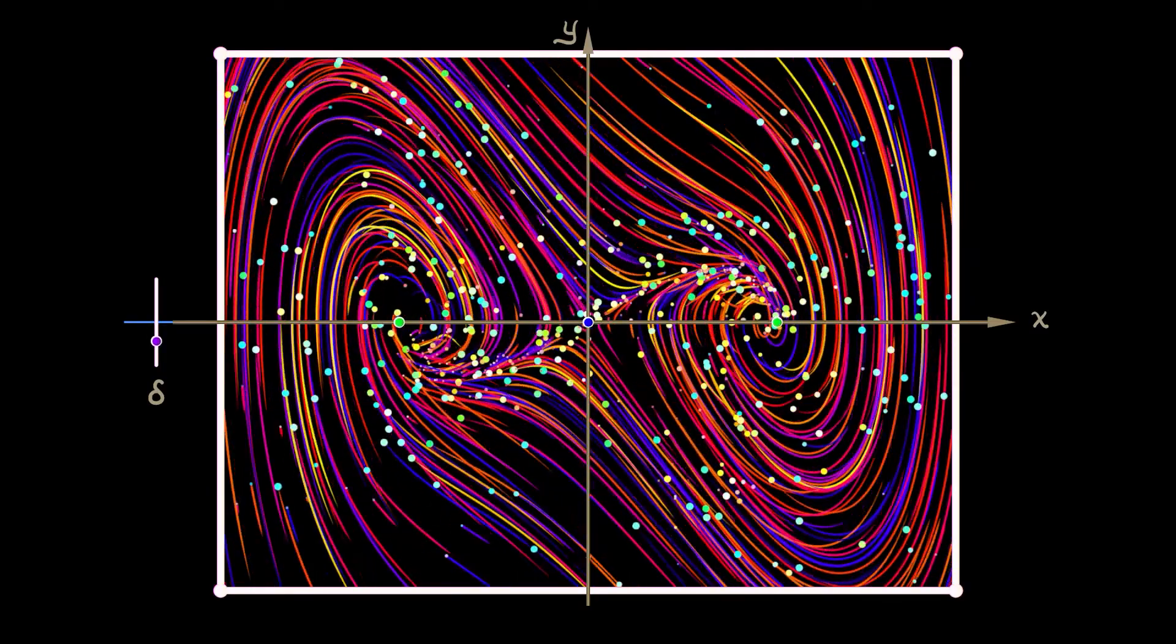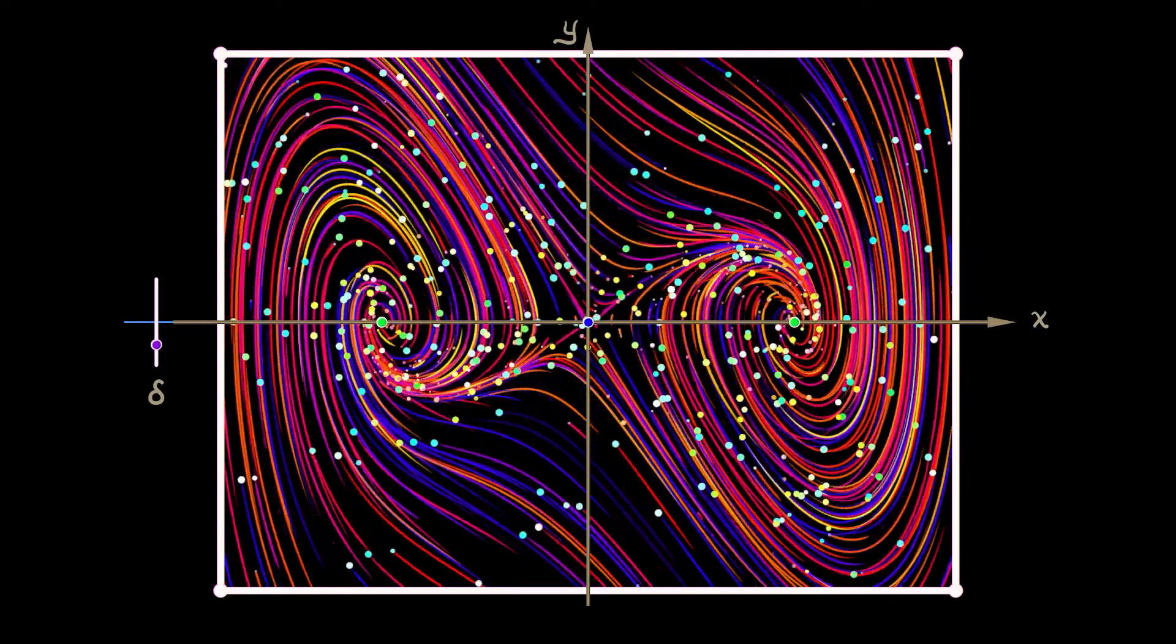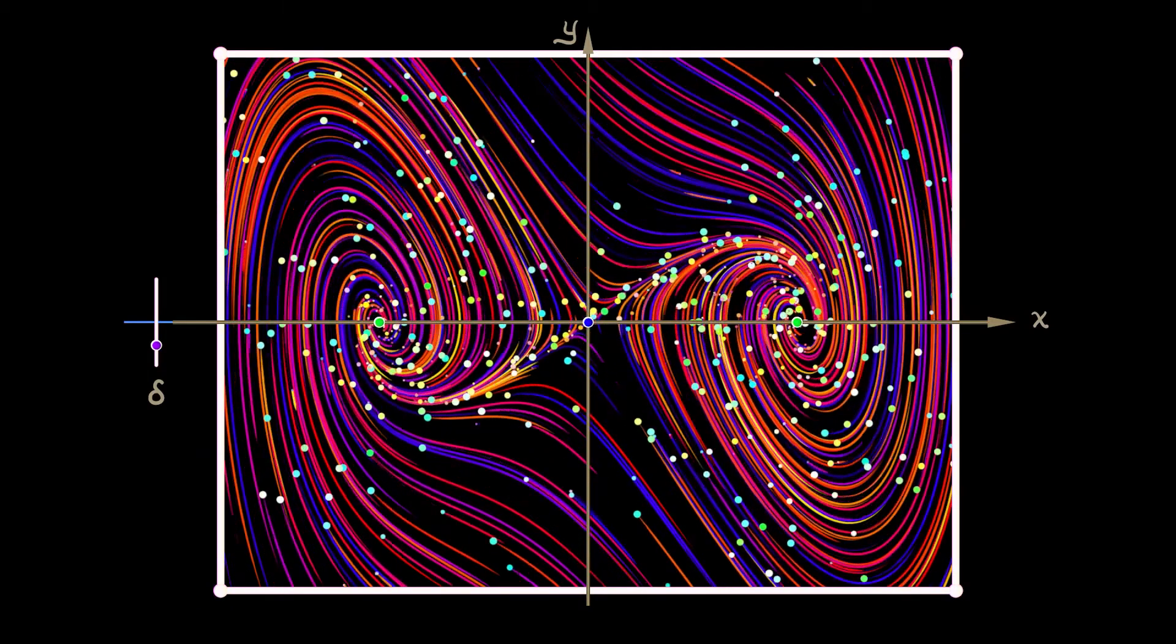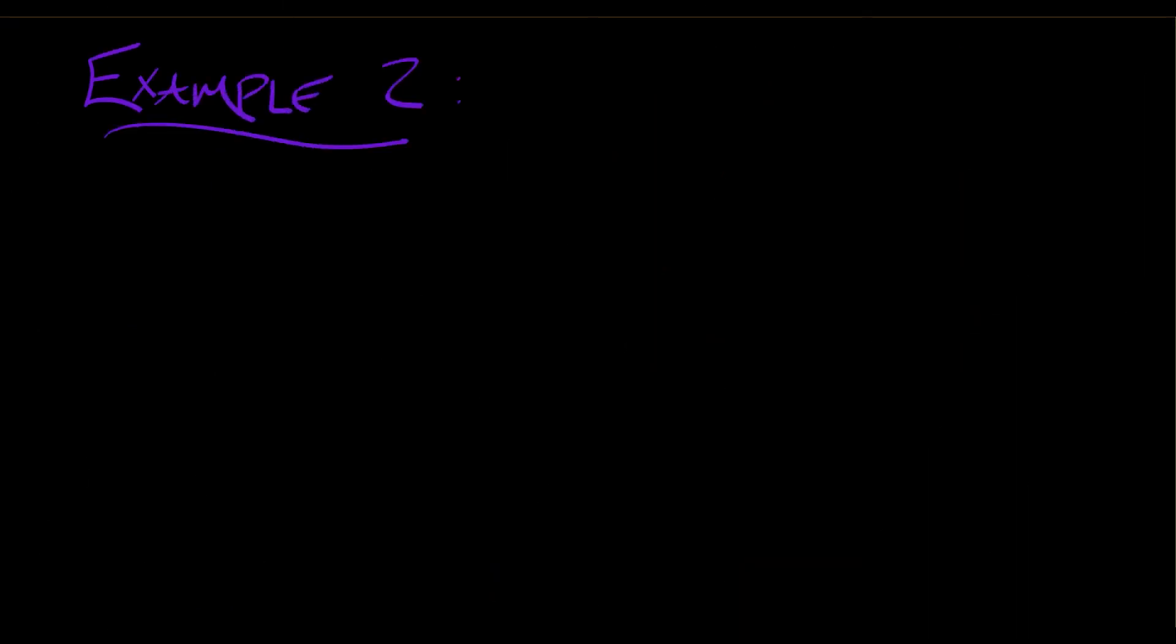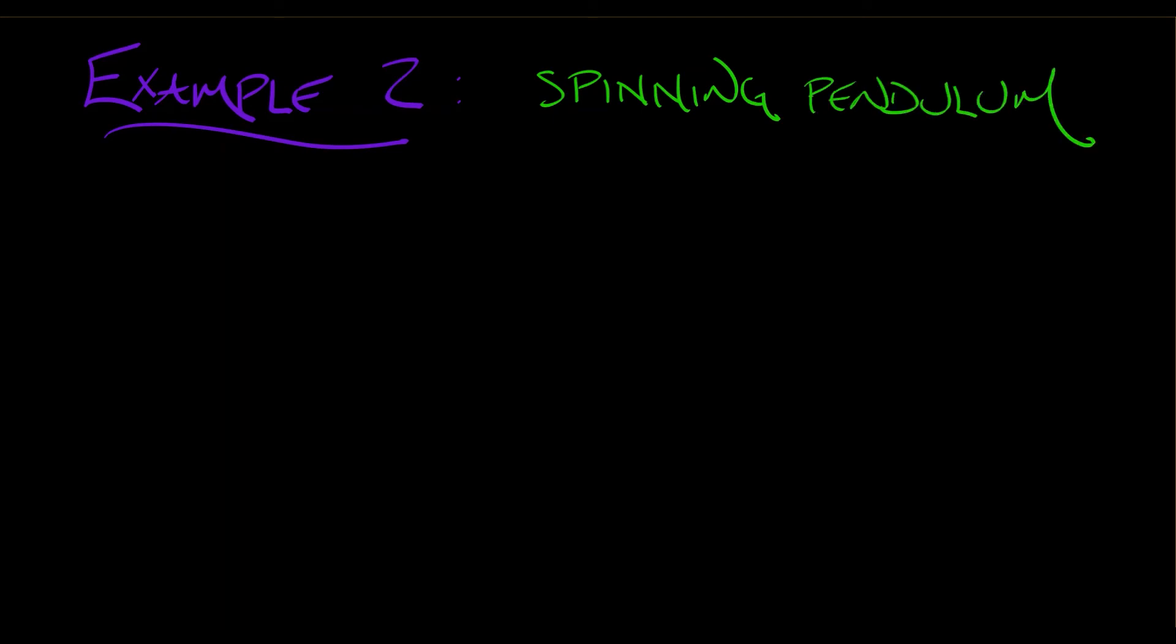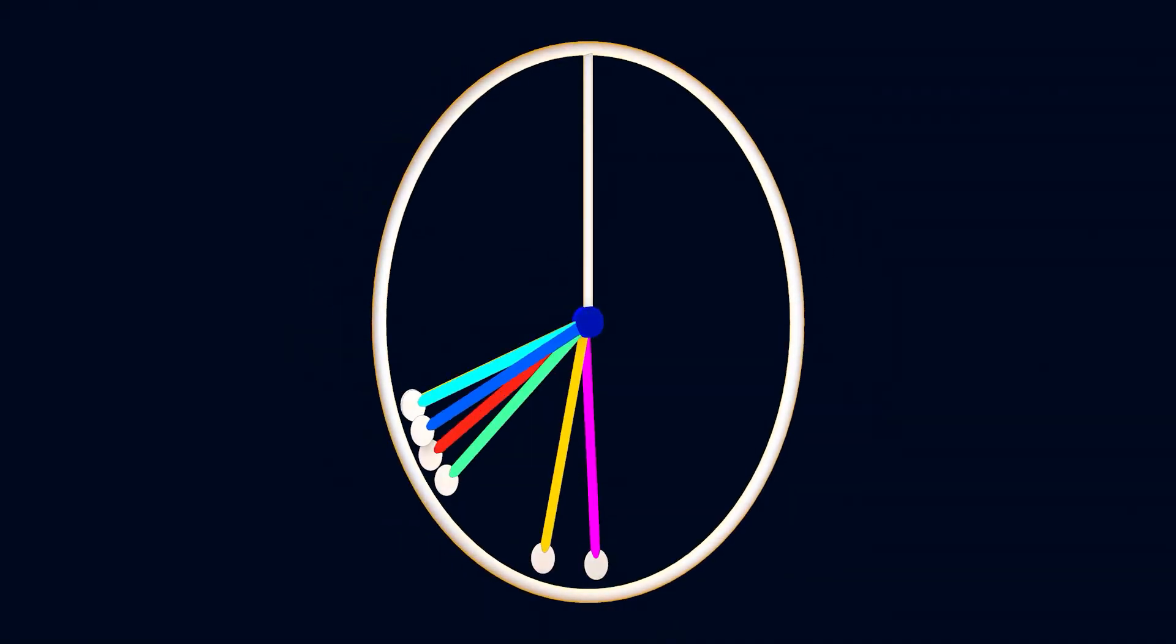For another example, let's recall the spinning planar pendulum where we have this pendulum going back and forth in the plane and we just take that whole rig and spin it around a vertical axis.